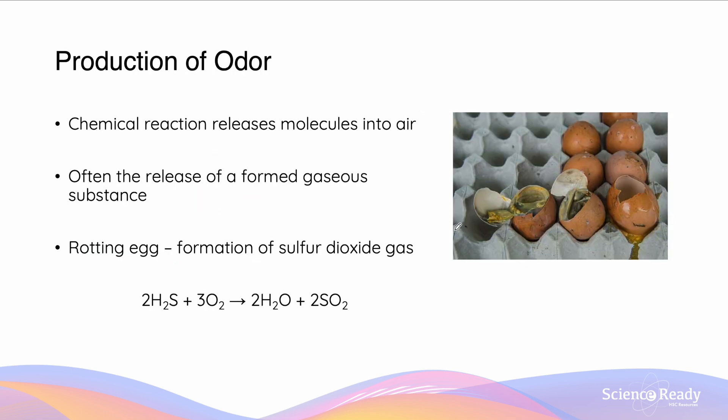The production of an odour is similarly an indicator of chemical change. This is because to scent an odour, there must be a release of molecules into the air. This means that odours which we are able to scent are often the release of a formed gaseous substance. In the case of the rotting egg smell, it is actually the formation of sulphur dioxide gas, which is why we are able to smell it. This is where hydrogen sulphide reacts with oxygen to form water and the sulphur dioxide gas.